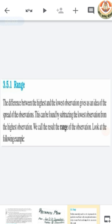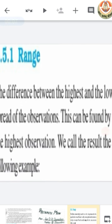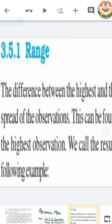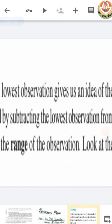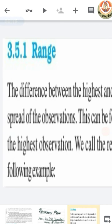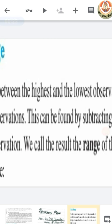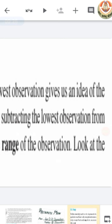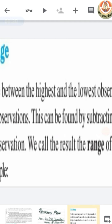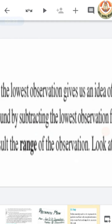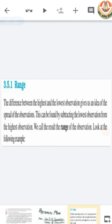There is one more term which is range. The difference between the highest and the lowest observation gives us an idea of the spread of the observations. This is found by subtracting the lowest observation from the highest observation, and we call the result the range of the observations.